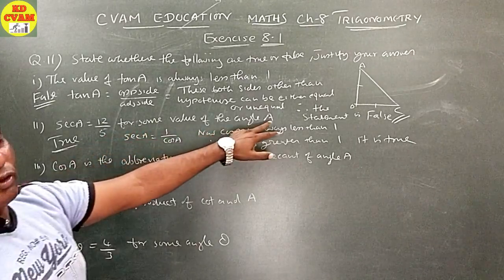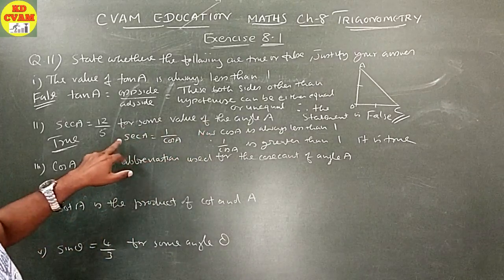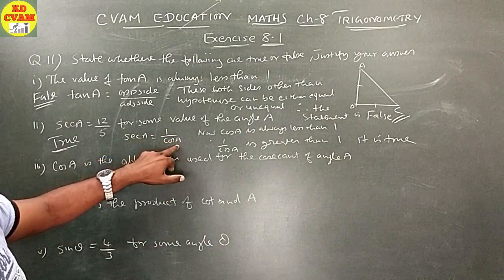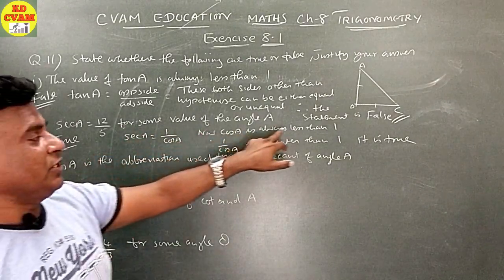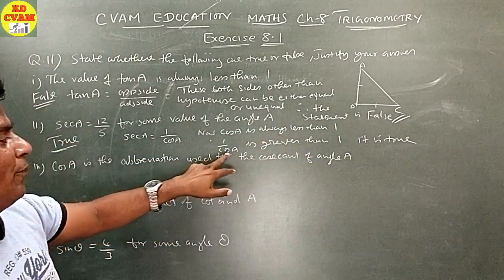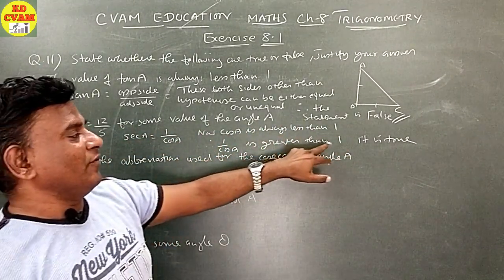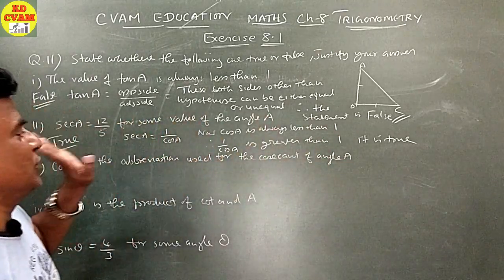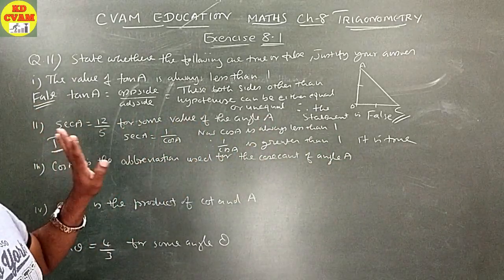Because hypotenuse is always greater than adjacent side, sec A equals hypotenuse upon adjacent side is always greater than 1. Therefore it is true.